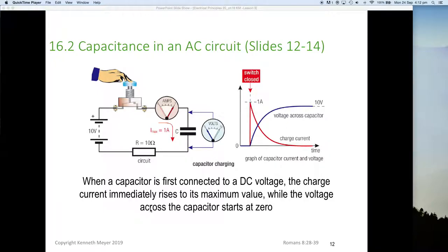So when a capacitor is first connected to a DC voltage, the charge current immediately rises to its maximum value, while the voltage across the capacitor starts at zero.